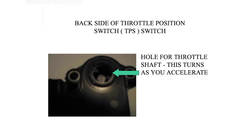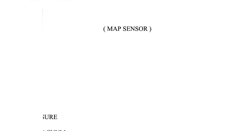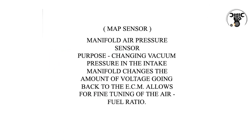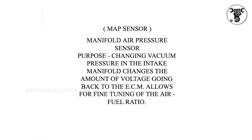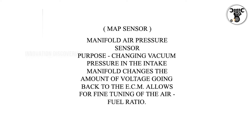MAP sensor — manifold air pressure sensor purpose: changing vacuum pressure in the intake manifold changes the amount of voltage going back to the ECM, allowing for fine-tuning of the air-fuel ratio.